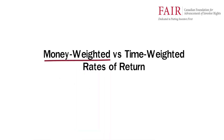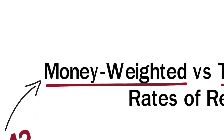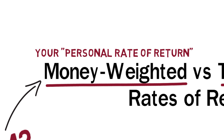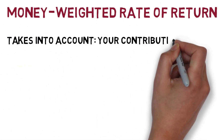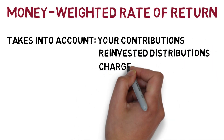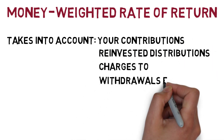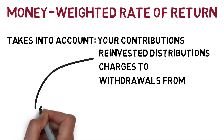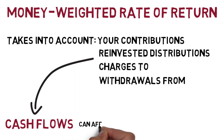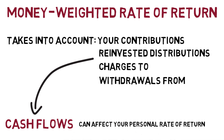There is a significant difference between money-weighted and time-weighted rates of return. The new CRM2 rules require financial institutions to provide you with a money-weighted return, which can be considered your personal rate of return on your money invested. A money-weighted rate of return takes into account your contributions, reinvested distributions, charges to, and withdrawals from your portfolio over time. These are collectively known as cash flows and can affect your personal rate of return.